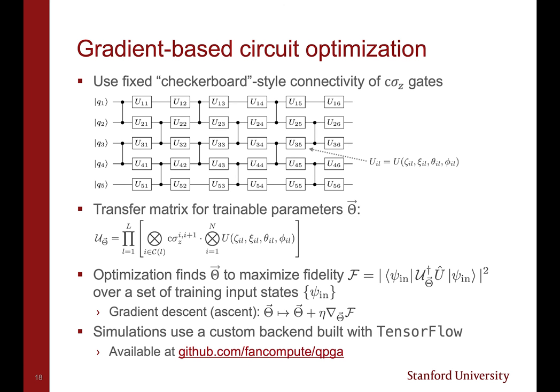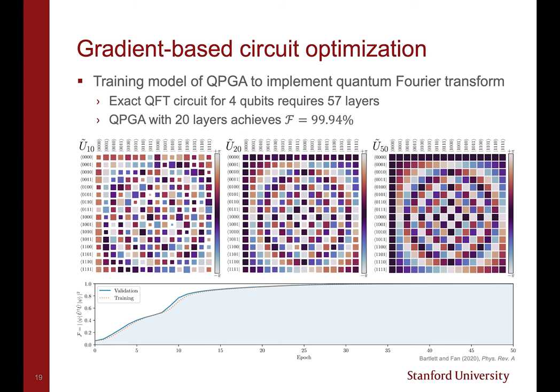To do this, we used a checkerboard style connectivity, where half of the controlled-Z gates are disabled. The transfer matrix of this system takes the form shown here, and the single qubit phase shifters are allowed to train around this fixed structure. The optimization routine finds a set of parameters which maximizes the fidelity over a set of randomly generated training input states. The simulations presented here use a custom backend built with TensorFlow, which is available on the Fan group GitHub.